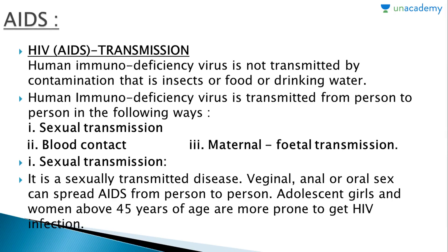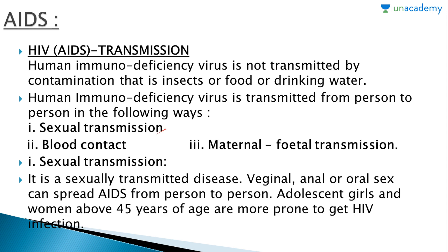HIV/AIDS transmission: the Human Immunodeficiency Virus is not transmitted by contamination through insects, food, or drinking water. HIV is transmitted from person to person in the following ways: first, through sexual transmission; second, through blood contact; and third, through maternal-fetal transmission. Sexual transmission — it is a sexually transmitted disease; vaginal, anal, or oral sex can spread AIDS from person to person. Adults and women above 45 years of age are more prone to HIV infection.